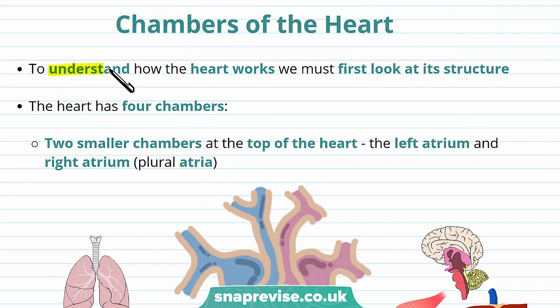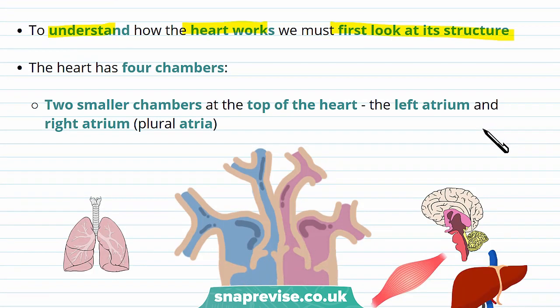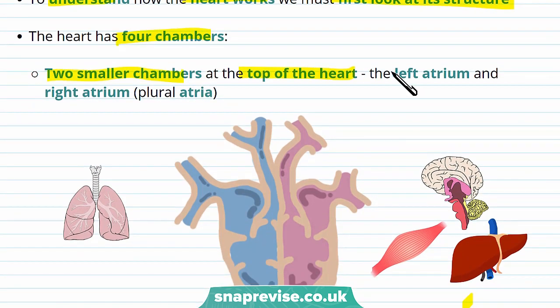To understand how the heart works and what its function is, we have to look at its structure and how the structure helps it to fulfil its role. The heart has four chambers: two small chambers at the top of the heart — the left atrium and the right atrium. The plural of atrium is atria.